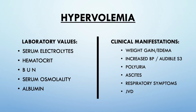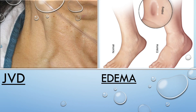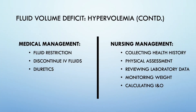Jugular vein distension (JVD) may be seen with excessive fluid volume — fluid builds up within the jugular vein, which visibly protrudes from the neck. Edema can be pitting or non-pitting; pitting edema is where pressing into the skin leaves an indentation that remains after the finger is removed, indicating significant fluid under the skin. Medical management focuses on restricting fluids, discontinuing IV fluids, and administering diuretics to eliminate excess fluid.